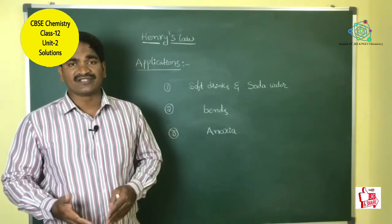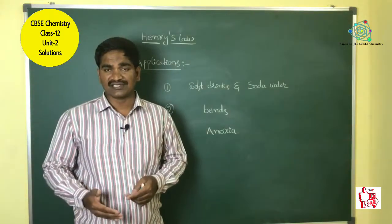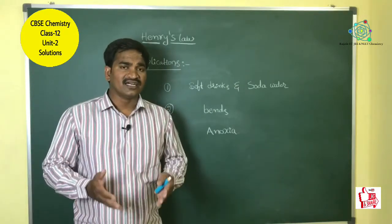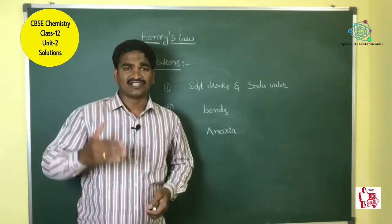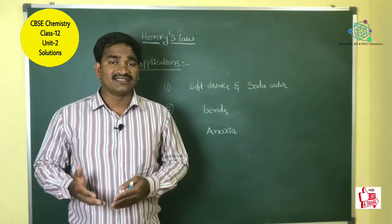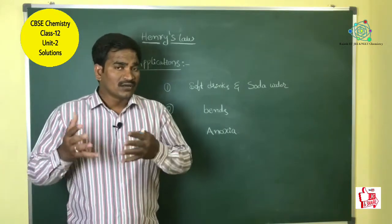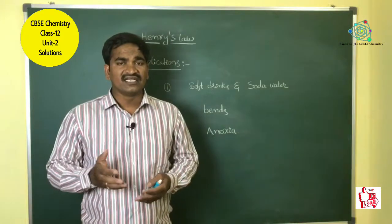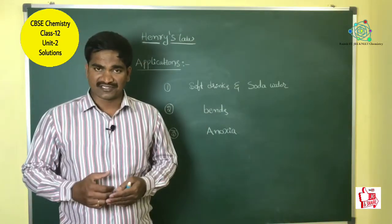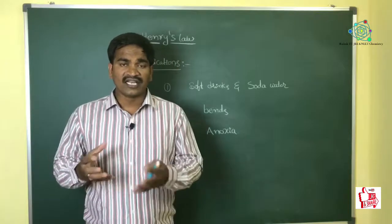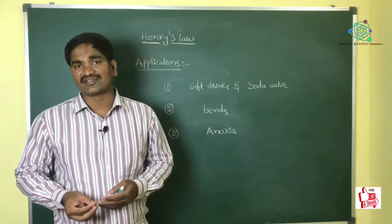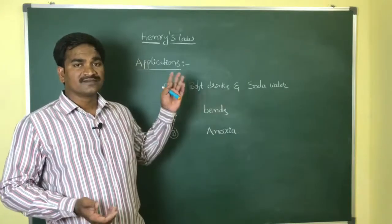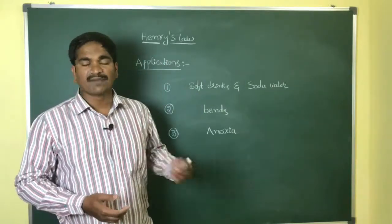The third application involves anoxia. Mountain climbers at higher altitudes experience very low partial pressure of oxygen, so they cannot breathe frequently. This leads to dizziness and sometimes unconsciousness — this condition is called anoxia. To prevent anoxia, climbers use cylinders filled with oxygen, based on Henry's Law. These are the three applications of Henry's Law.